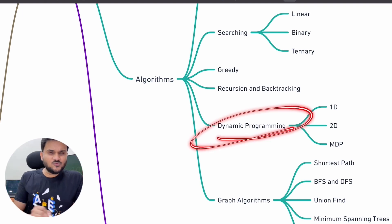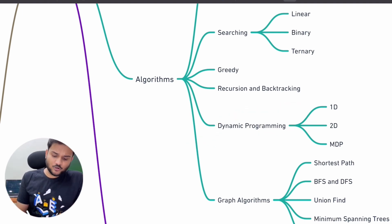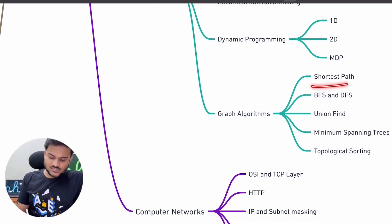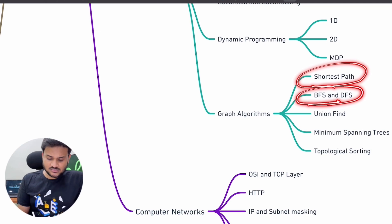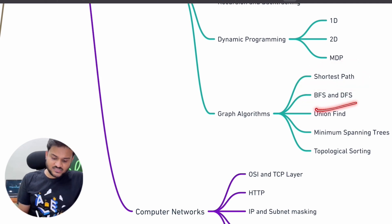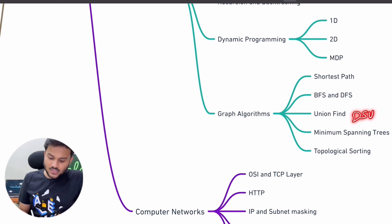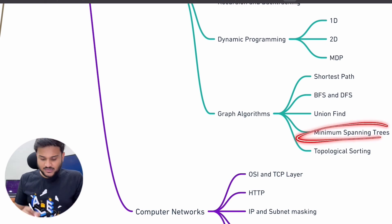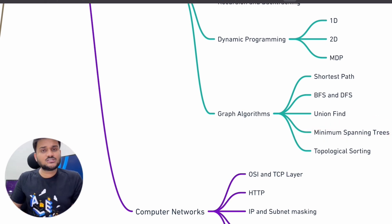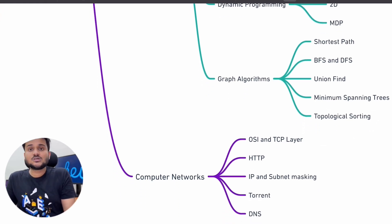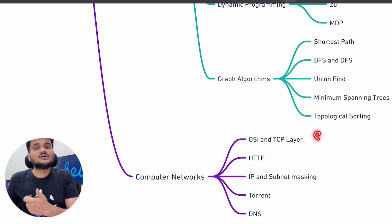We will talk about dynamic programming and see all the major patterns of dynamic programming in 1D, 2D, and multidimensional DP. We will talk about graph algorithms — shortest path algorithms like Dijkstra's, BFS, DFS, Union Find, DSU (Disjoint Set Union), minimum spanning trees, topological sorting — and solve problems with all of these algorithms from websites like Codeforces, LeetCode, etc.